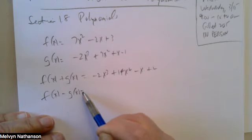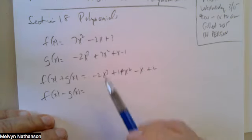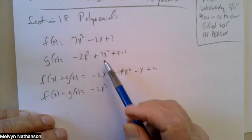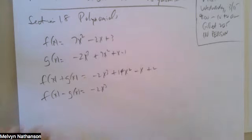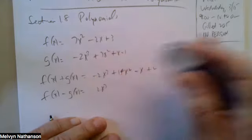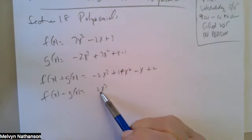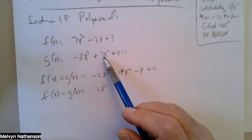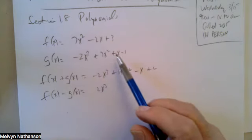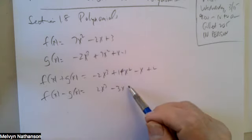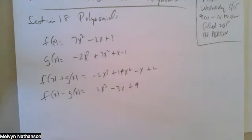And if you subtract the polynomials, you're also subtracting term by term. Taking f minus g: -(-2x³) gives +2x³, 7x² - 7x² = 0, -2x - x = -3x, and 3 - (-1) = 4.